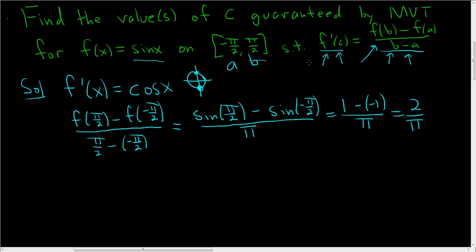All right, so on the left-hand side, we have f prime of x, or in this case, I wrote C, so cosine x. And on the right-hand side, we worked it out, right? We worked out the right-hand side. It's just 2 over pi.